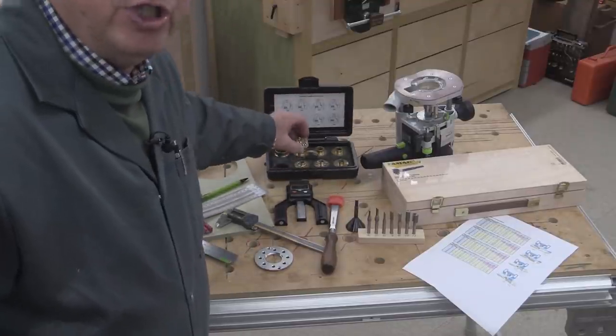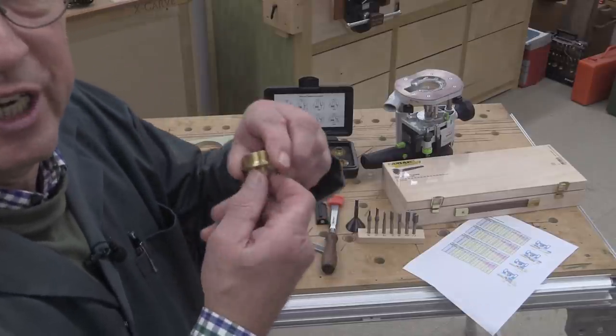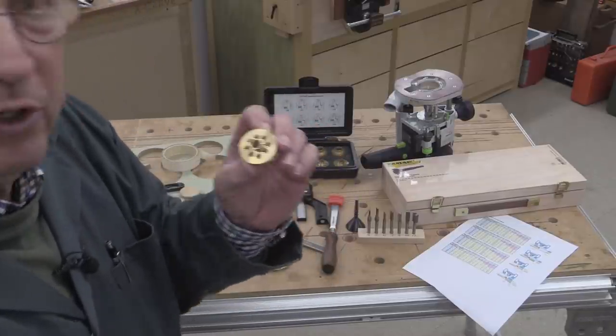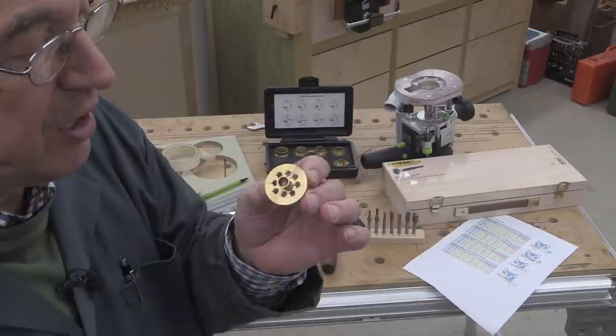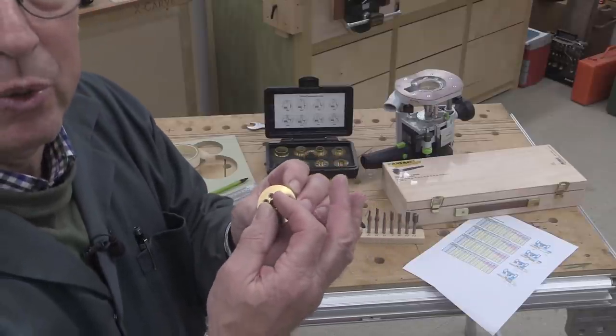Now, I mentioned in that video that there was a chance of the buildup of dust on the guide as one's using it. So I've now modified three of these guide bushes. And they're the three with the smallest diameter holes.